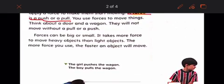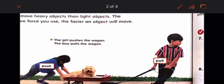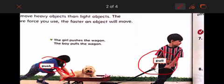So a wagon also, the girl pushes the wagon. What kind of force she is using? The push. So she is pushing the wagon as the boy, which force he is using? A pull force to pull on the wagon.